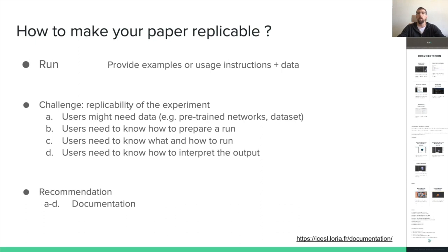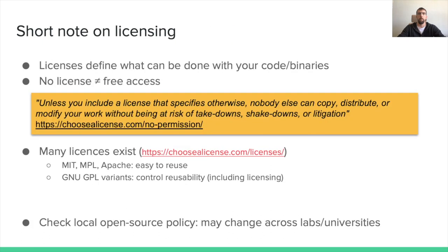People need to know how all these steps need to be followed to replicate the experiment. You can find several examples in the documentation pages of open source projects in our community. Before finishing, I would like to add a short note on licensing. Providing a license is mandatory to define what can be done with your artifacts. Without any license, nobody else can copy, distribute, or modify your work. Many licenses exist — some are very permissive, and others allow you to control reusability. In any case, your research group or university likely already has an open source policy defining which license to use, so just ask.